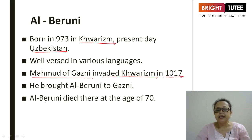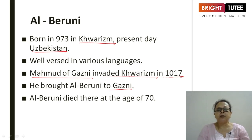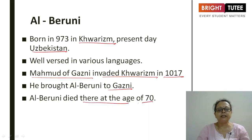Mahmood of Gajni brought Al-Biruni to Gajni after his invasion, and Al-Biruni died there at the age of 70.